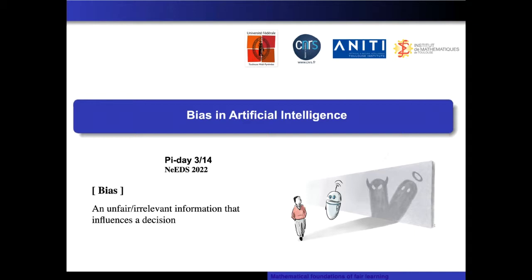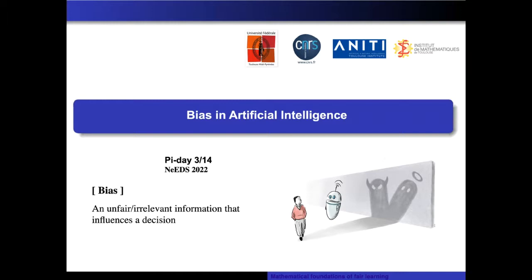First, I want to define what bias is. It's very complicated. If you look in the dictionary, what is meant by bias is that it's about some irrelevant information that influences a decision but should not. It's closely related to the notion of unfairness or confounding effect, and we're going to see how this notion interacts with machine learning.